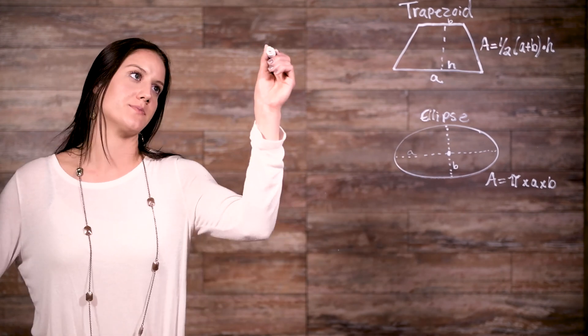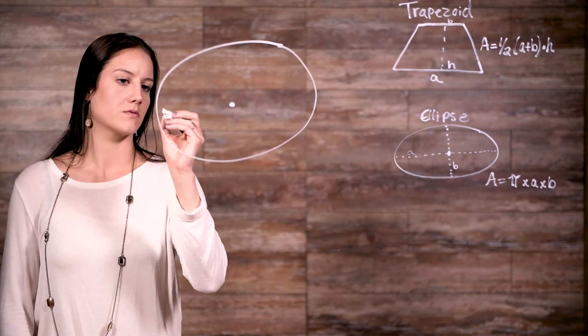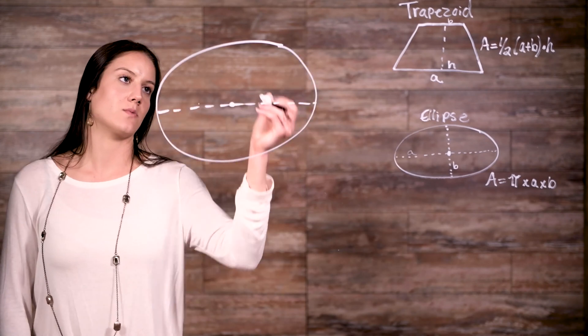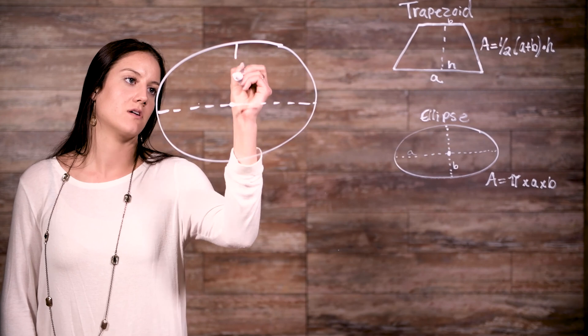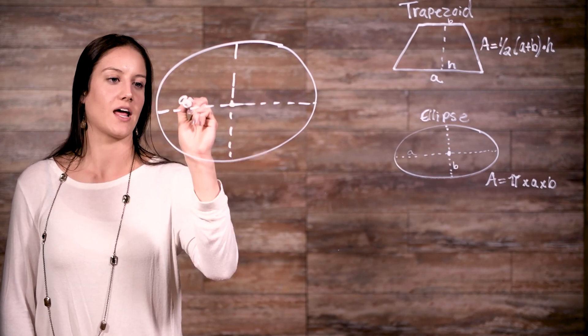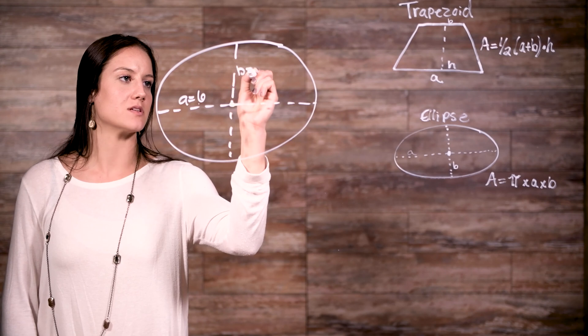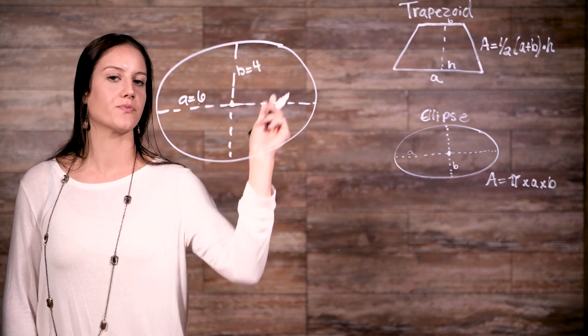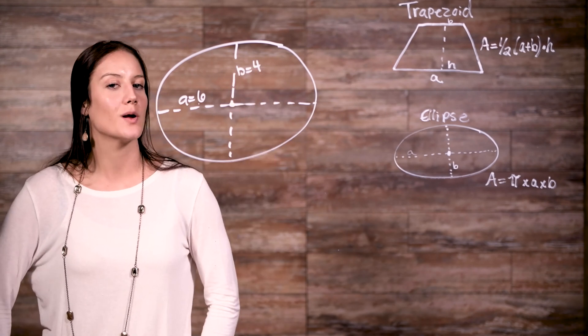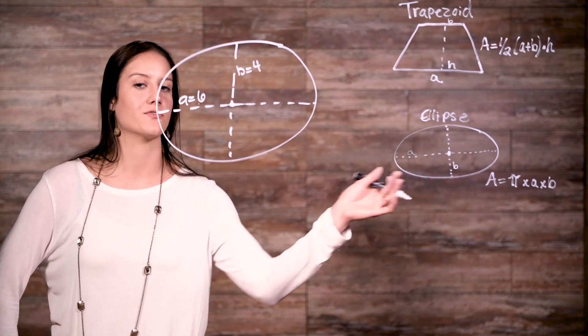Alright, now let's say you have an ellipse, and let's say that we have our a is equal to 6 and our b is equal to 4. Now all we need to do is plug in our numbers into the formula we have for an ellipse.